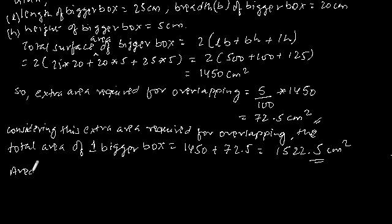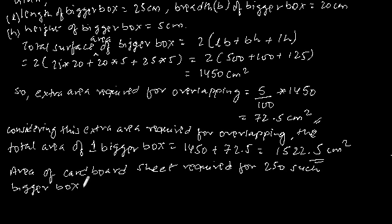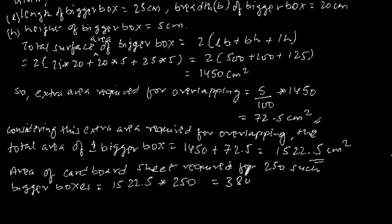Area of cardboard sheet required for 250 bigger boxes is equal to 1522.5 × 250, which gives 380,625 cm².